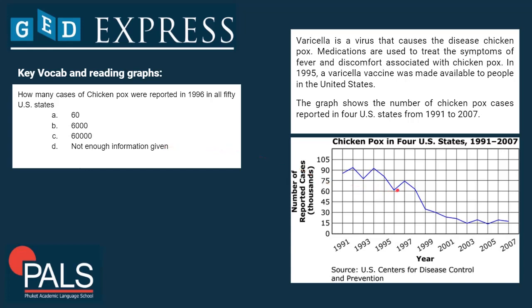That means we do not have enough information from this graph to answer the question, so the correct answer is D. Whenever you have a question related to a graph, make sure you carefully check: first, the title of the graph — what does the graph actually show; second, the axis — check the units of the axis and compare them to your answer choices; and third, check the values and the trend of the graph over the time period shown.